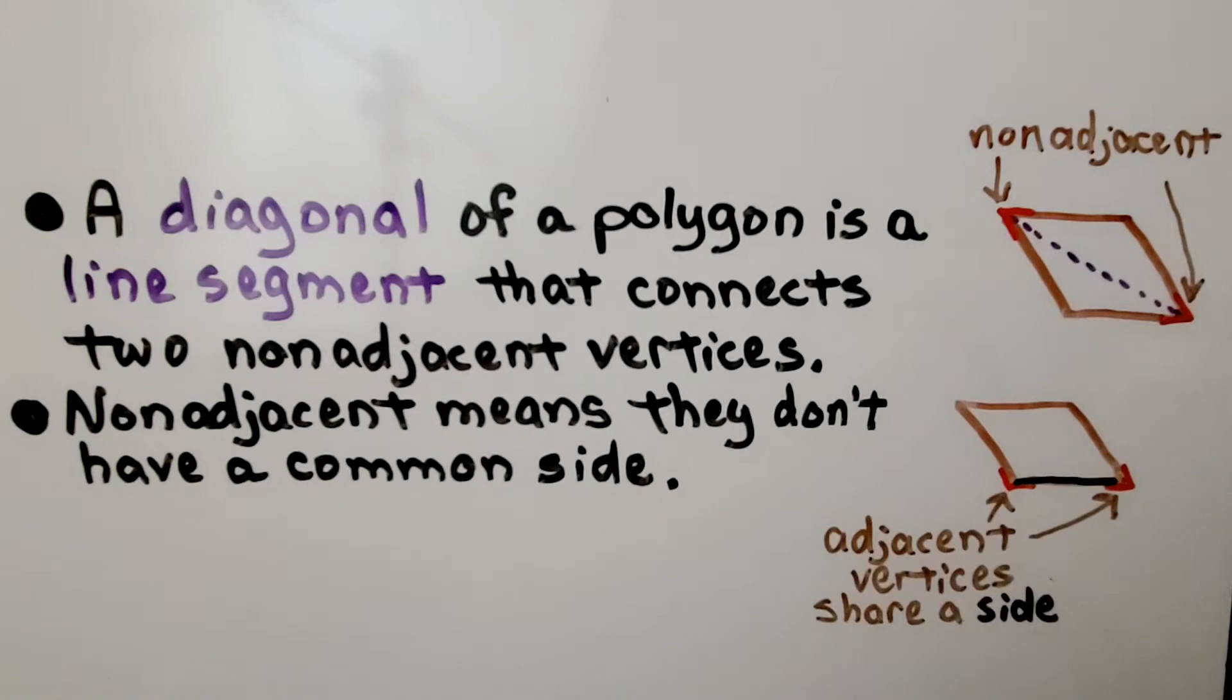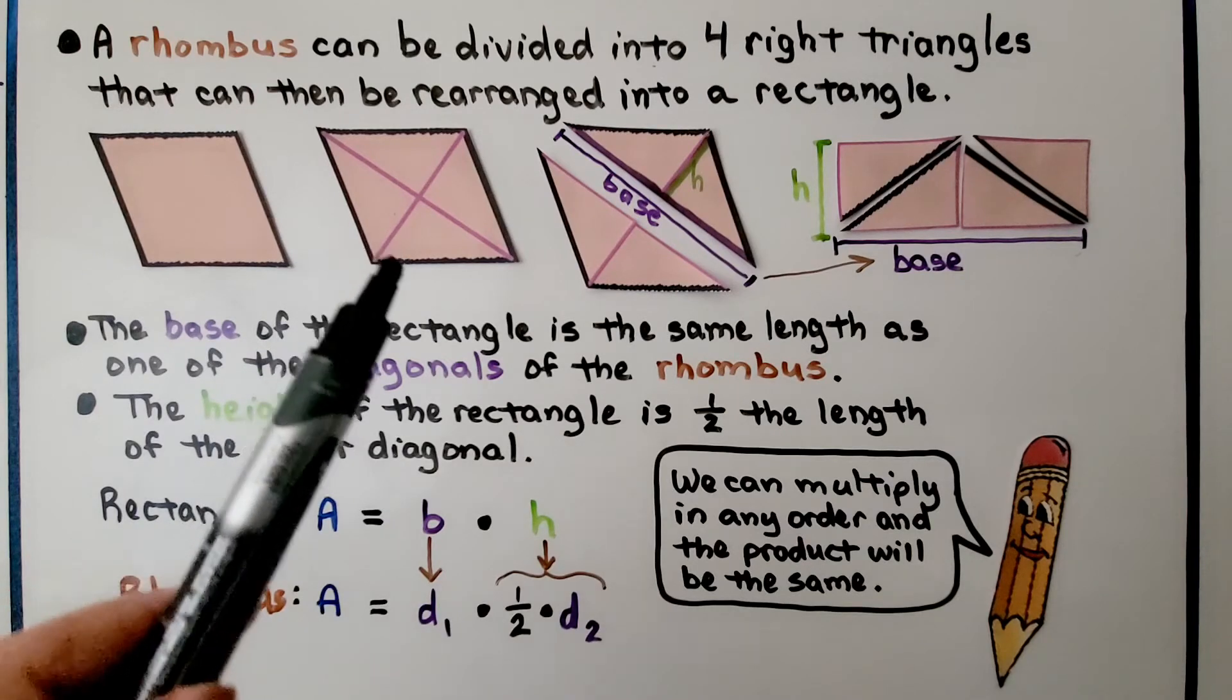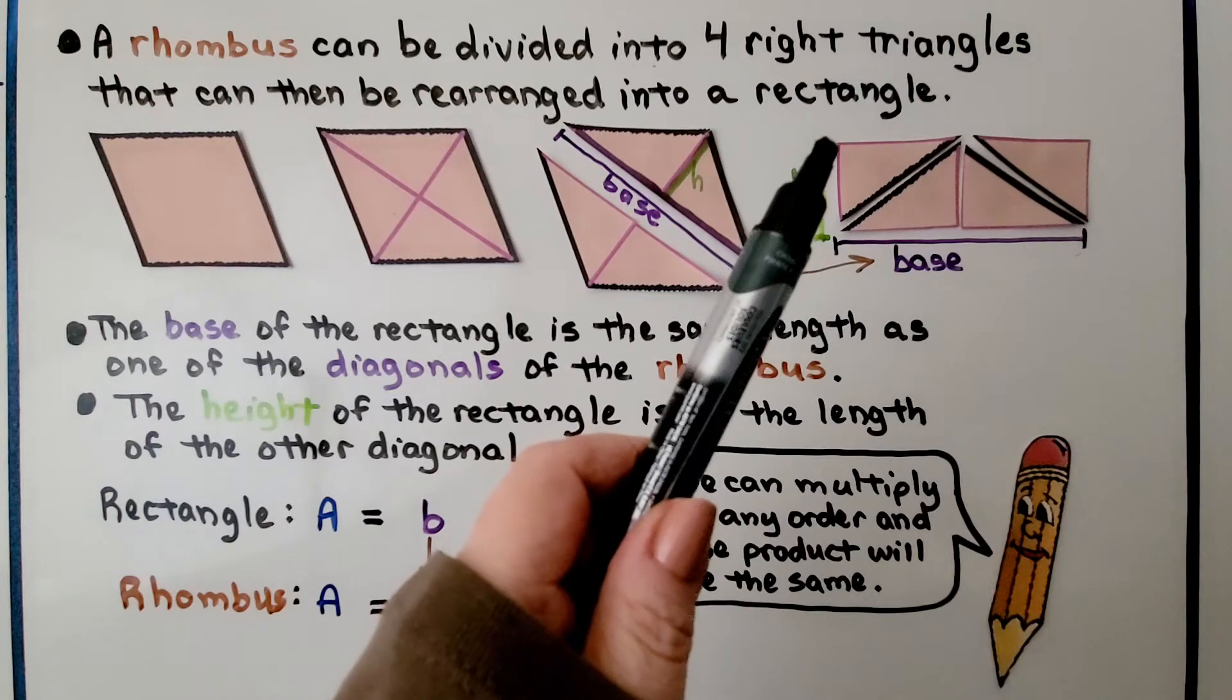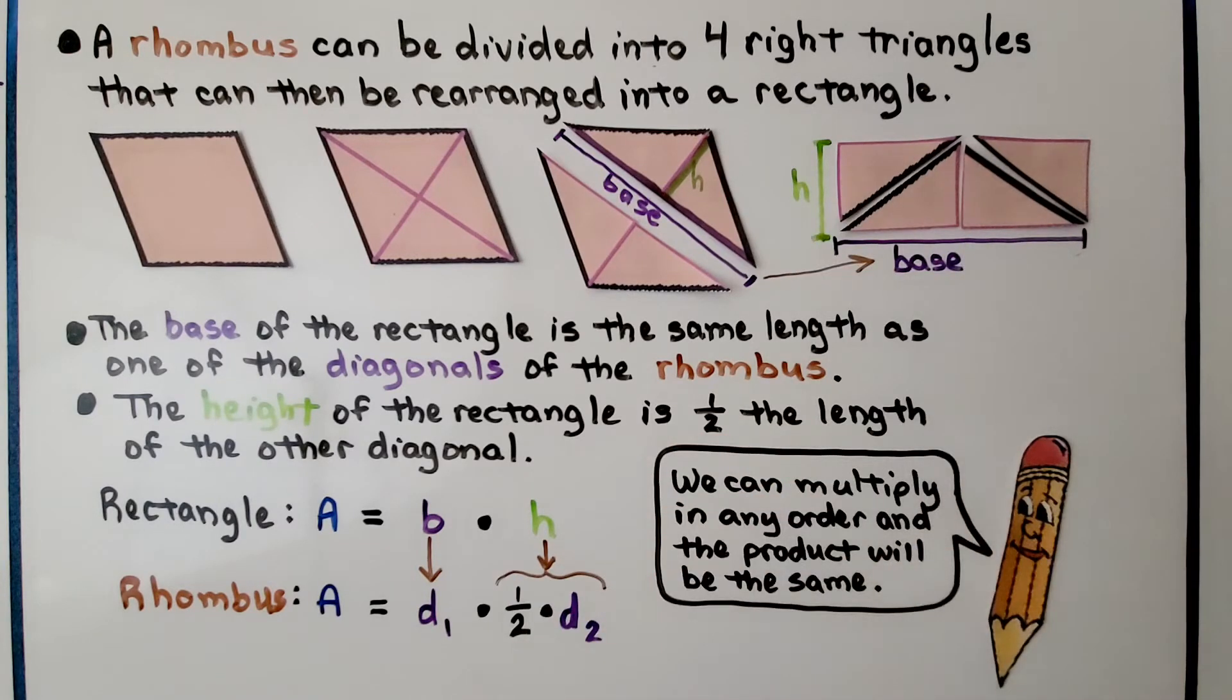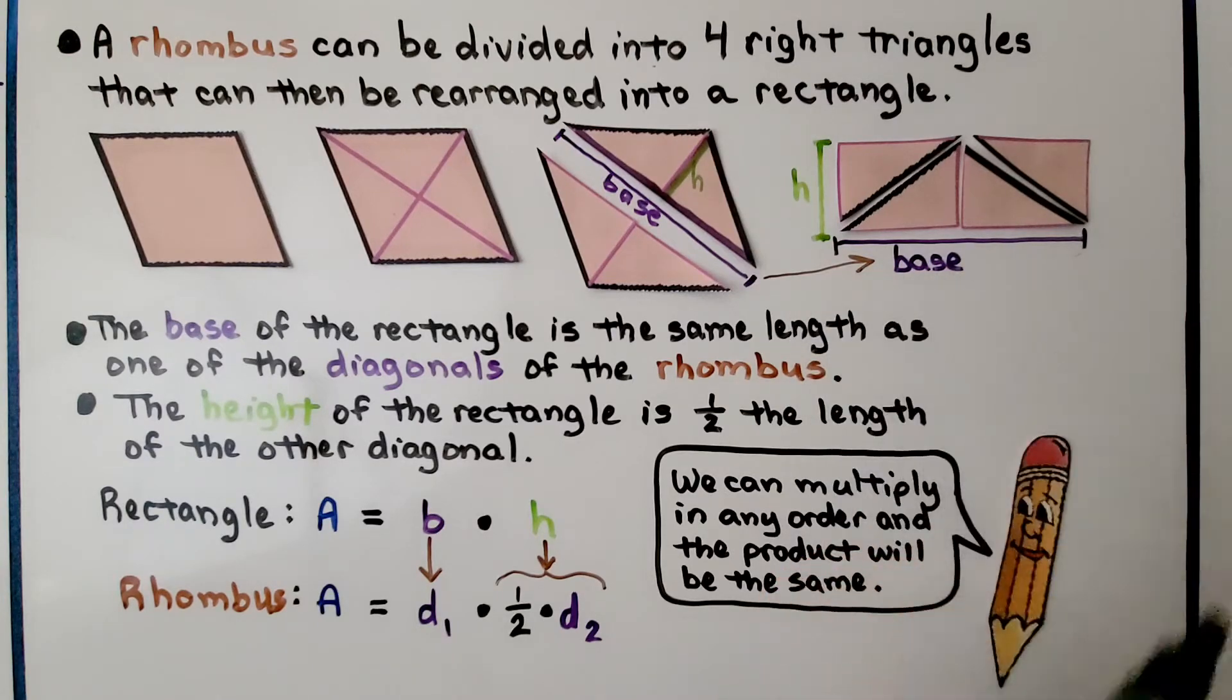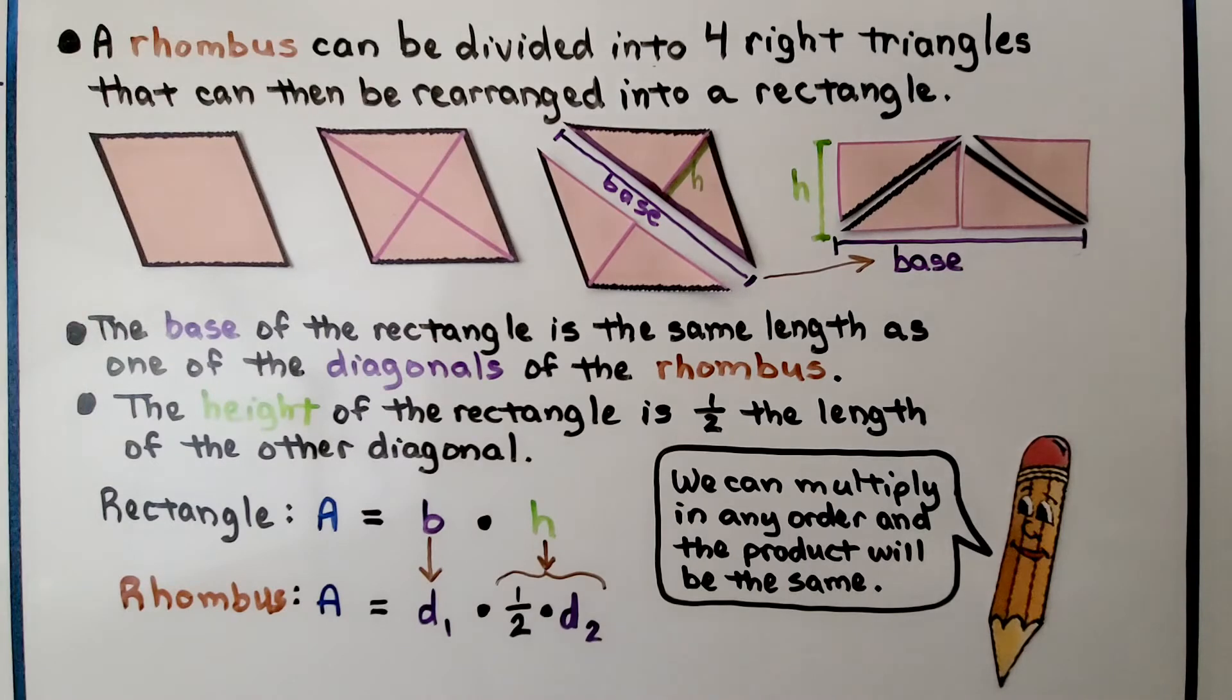A rhombus can be divided into four right triangles, and they can be arranged into a rectangle. Notice we have one of the right angles on the upper side here, another right angle here, but these two right angles are on the inside, and it makes a rectangle. The base of the rectangle is the same length as one of the diagonals of the rhombus.